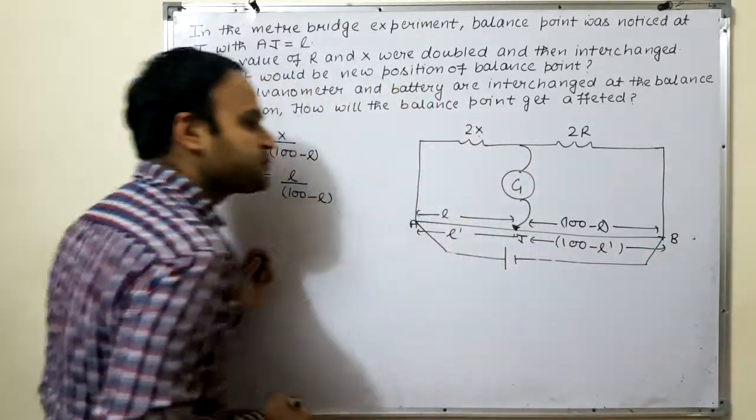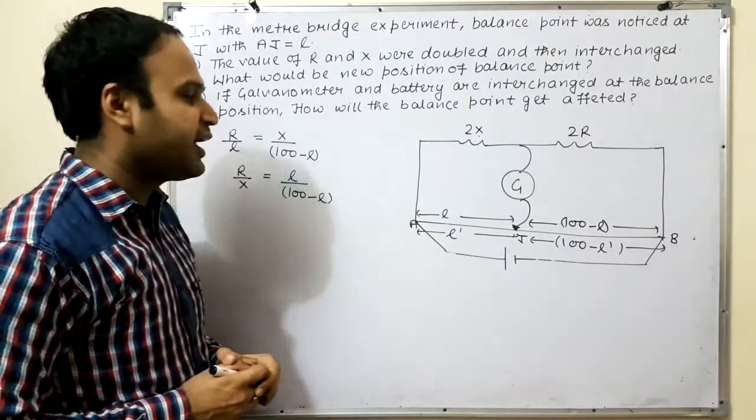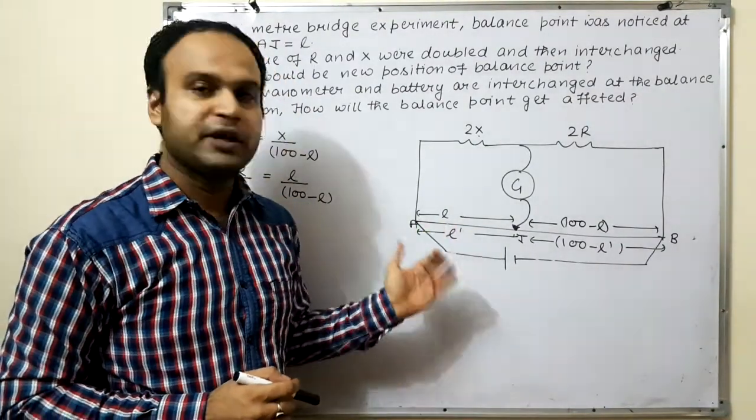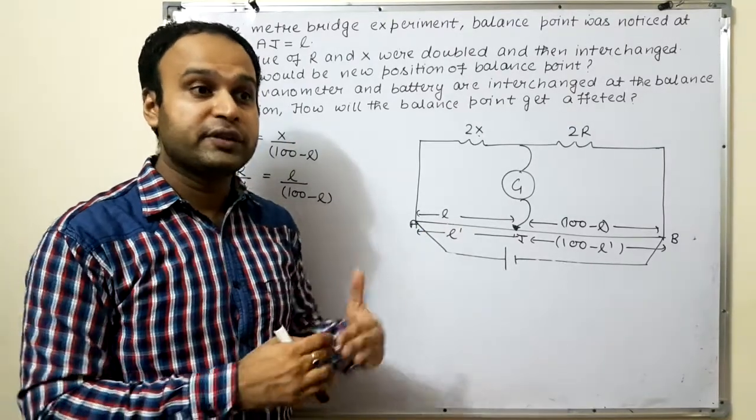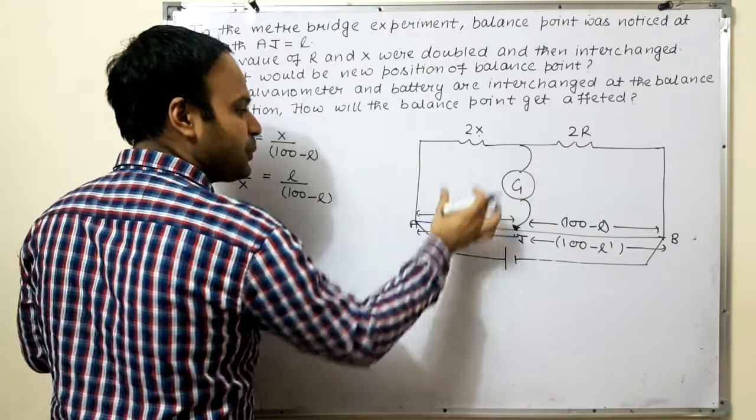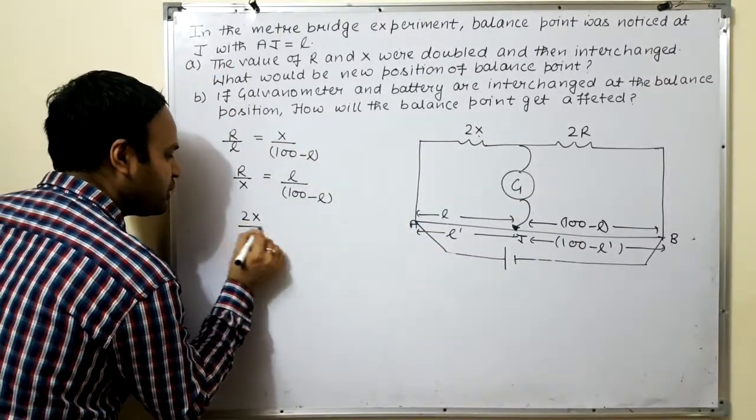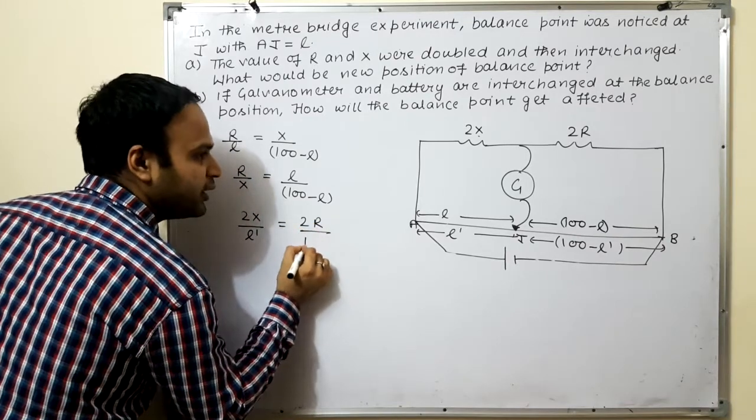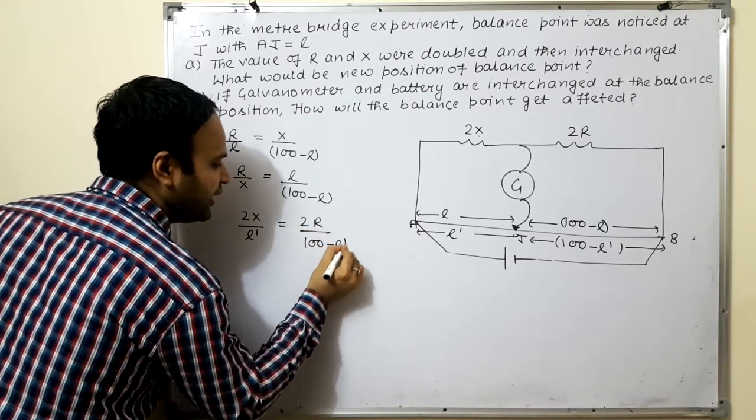In the first part, basically, we have to judge L dash. We have to do doubling and interchange. So let's see what we have to do. This upon this means 2X by L dash equal to 2R by 100 minus L dash.